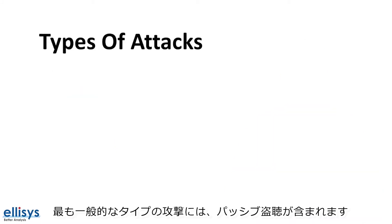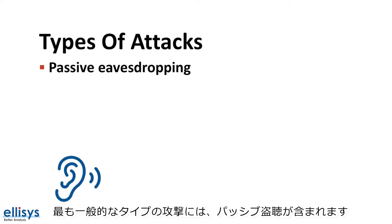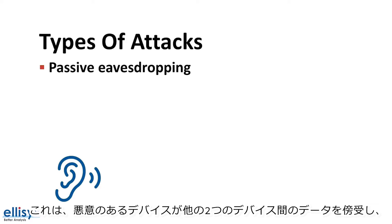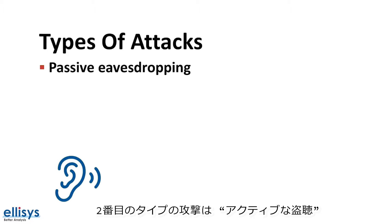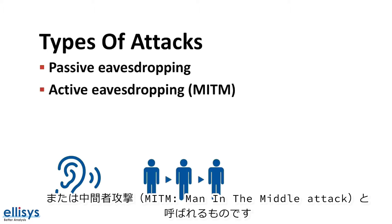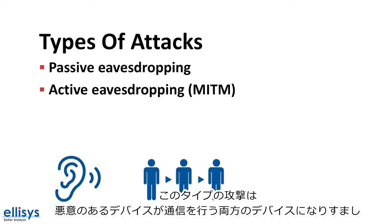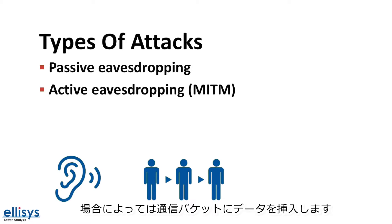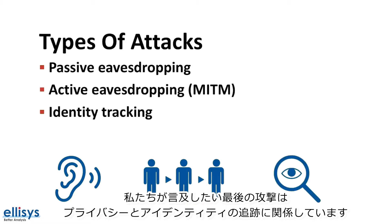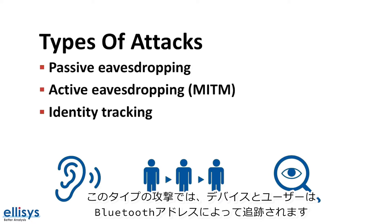Based on these concerns, some of the most common types of attacks include passive eavesdropping, which describes when a malicious device listens in on data between two other devices and is able to understand that data — usually by having access to the encryption key. The second type is active eavesdropping, or a man-in-the-middle attack, where a malicious device impersonates both devices, intercepting communication between them and possibly injecting data into the communication packets. The last attack involves privacy and identity tracking, where devices and users are tracked by their Bluetooth address.